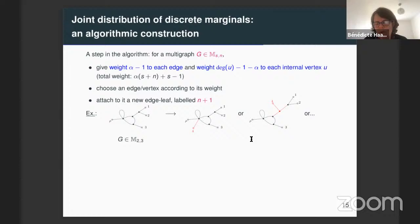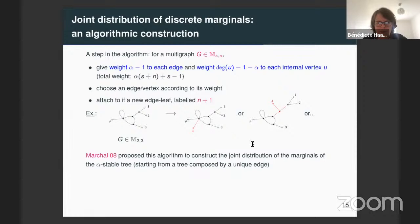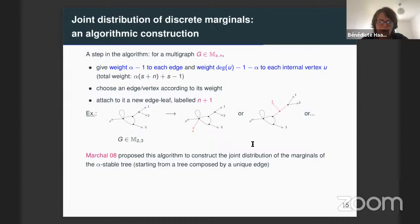If we have picked a vertex, we add a new edge-leaf. In general, we add a new edge-leaf with label N plus one. If we have picked an edge, we split this edge in two and glue on it a new edge-leaf with label N plus one. Philippe Marchand proposed this to construct recursively the marginals of the stable tree, starting from a tree composed of a unique edge and performing this algorithm recursively to obtain the marginals of the alpha-stable tree.